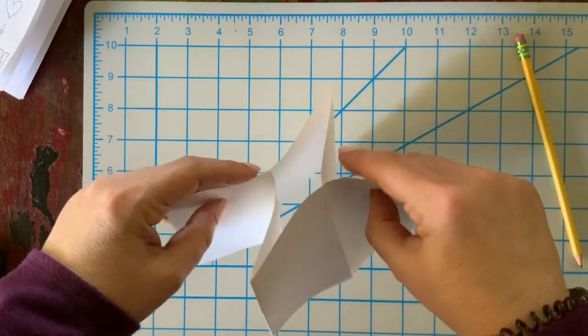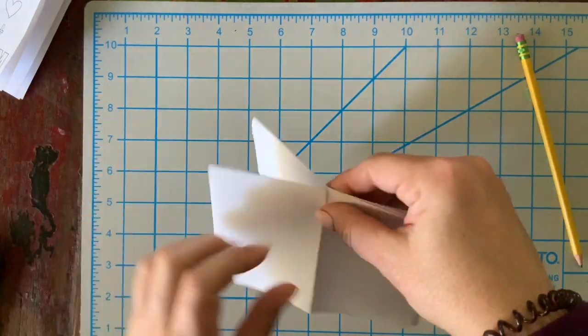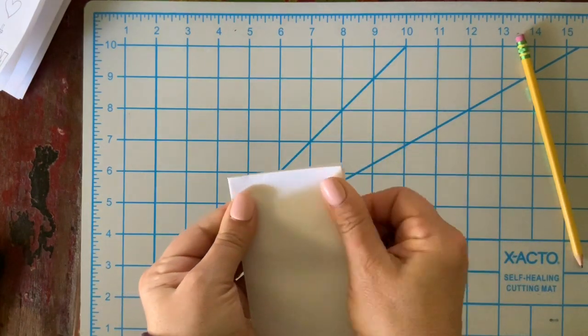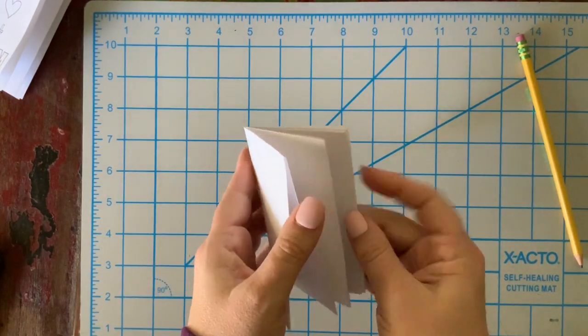So you'll pinch and push it to the center. Now you'll fold it towards the center like a book and you'll start to see it taking the shape of a mini magazine.